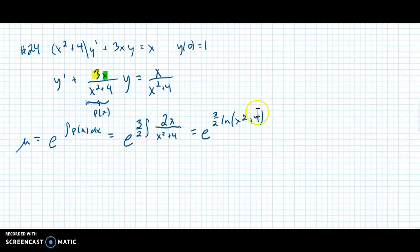Now, just like with many of these, the ln and the e, we want them to cancel, but the 3 halves is in the way. Fortunately, I can plug it in. So that gives me e to the ln of x squared plus 4 to the 3 halves, which then these two cancel each other out. And that gives me just the x squared plus 4 to the 3 halves. So that's my mu.